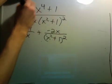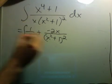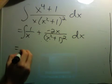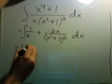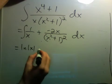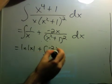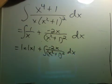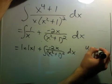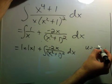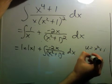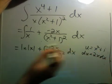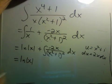So this is now something really easy to integrate. The first term is just natural log of x. The second term, we can do a substitution. If I let u be x squared plus 1, I get du is 2x dx. And I already have a 2x dx sitting up there. So this is real nice.